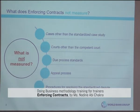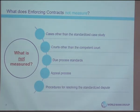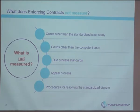It's important to note that in the enforcing contract indicator, we only look at one specialized court. We do not look at what happens in different courts. We also look only at what happens given our case study assumptions. We don't take into account due process standards, any appeal processes, or procedures for resolving the standardized dispute. Following a methodology change in Doing Business 2015 or 2016, procedures are no longer counted towards the score.